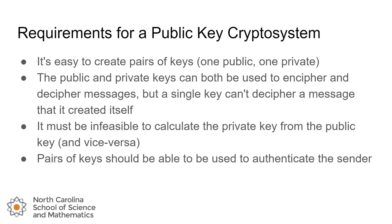Here are the requirements for any public key crypto system. It should be easy — computationally — to create pairs of keys, taking seconds rather than hours. Those keys can be used to encipher and decipher messages, but a single key can't decipher a message that it itself created. It should be infeasible to calculate the private key using information from the public key, and vice versa. And we should be able to use those key pairs to authenticate the sender of the message.